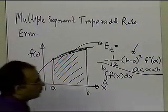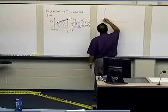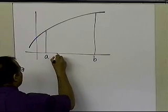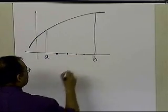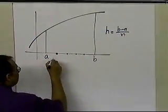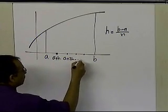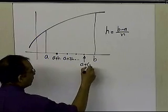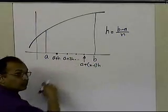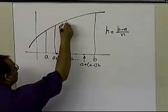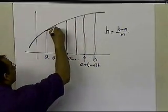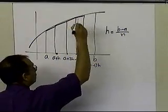So in a multiple segment trapezoidal rule, let's see what the error would be in that case. If I have the same kind of function and I'm integrating from a to b, in the multiple segment trapezoidal rule what I am doing is breaking this interval from a to b into n equal segments. So h is equal to b minus a divided by n, and then this point becomes a plus h, this becomes a plus 2h, and this last point is a plus n minus 1 times h. You break it up from a to b into n equal segments and find the areas of the individual trapezoids between these segments — from a to a plus h is one trapezoid, then second, then third, then fourth, and so on.